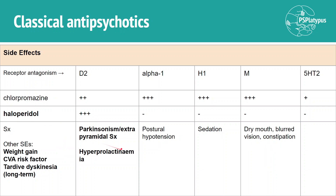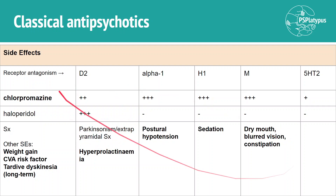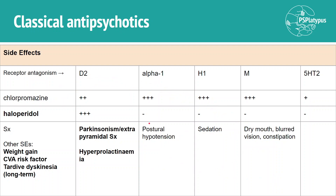Haloperidol will have just the core D2-related symptoms, but the Parkinsonism is bad enough that switching to chlorpromazine would actually be worth considering.